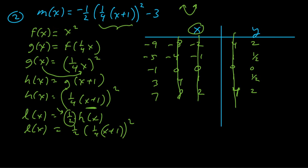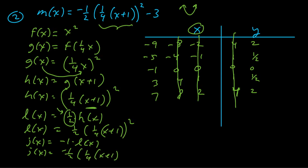Next, j(x) = -1·l(x), giving j(x) = -½(¼x + 1)². The negative one is not grouped with x — it affects the y values, making them all the opposite sign. This reflects the graph over the x-axis, so we negate all the y coordinates.